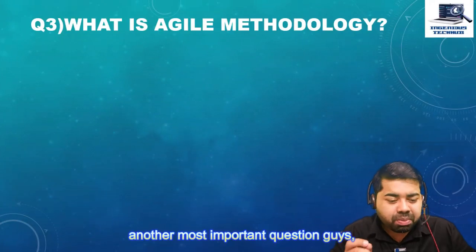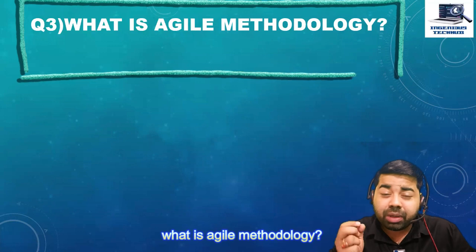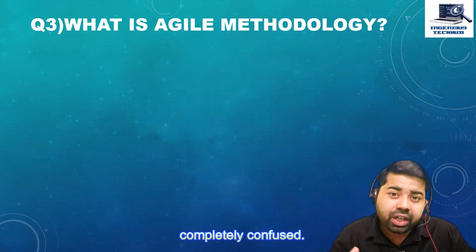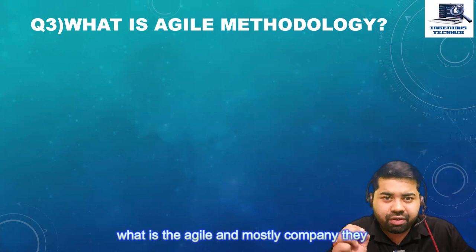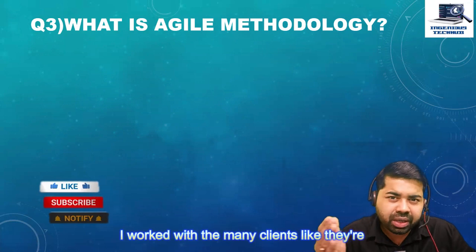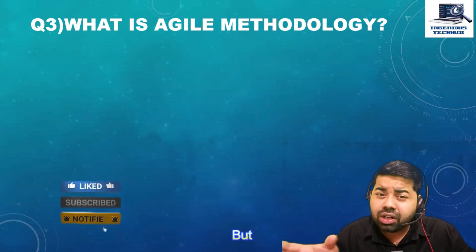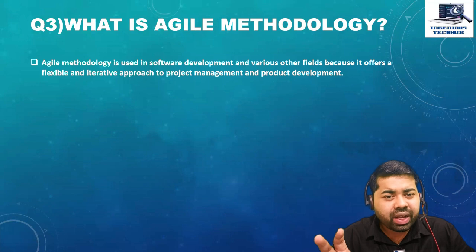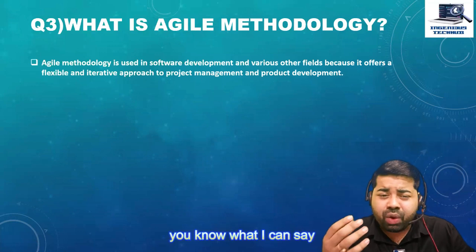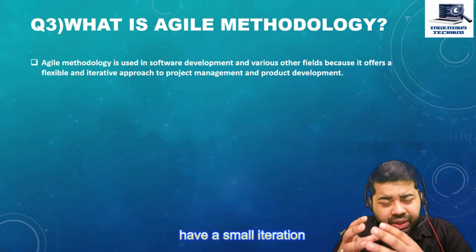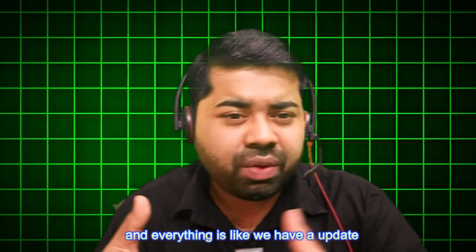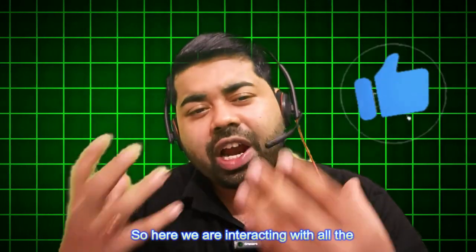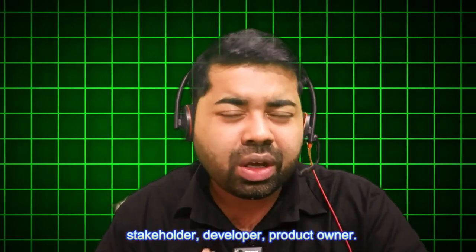Another very important question: what is Agile methodology? When I was taking interviews, I asked this question and people were completely confused. Most companies follow Agile. Agile is a methodology where we have small iterations, daily updates, and many Agile ceremonies. We interact with all stakeholders — developers, product owners — we have a daily stand-up meeting to discuss blockers, and we have sprint planning.